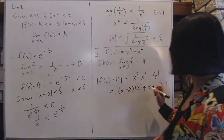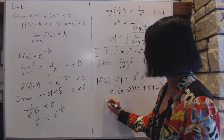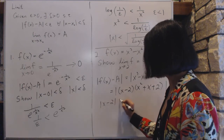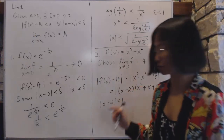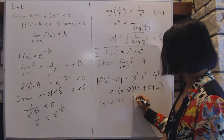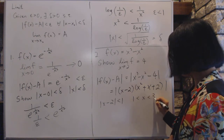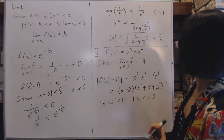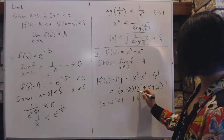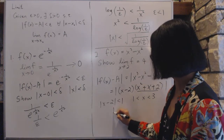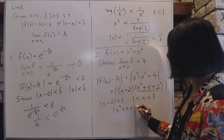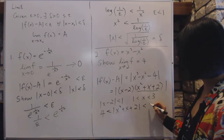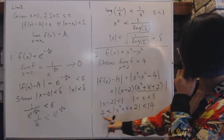Now here is the trick to prove this. We will say |x - 2| is less than 1, because x is approaching 2 so we limit its distance from 2 to 1. That means x is between 1 and 3. Under this constraint, the factor x² + x + 2 is bounded: when x equals 1 it gives 4, and when x equals 3 it gives 14.